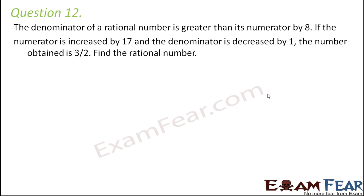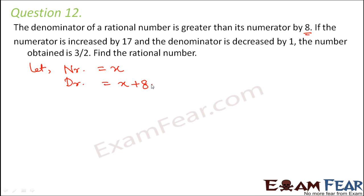Question number 12. The denominator of a rational number is greater than its numerator by 8. If the numerator is increased by 17 and the denominator is decreased by 1, the number obtained is 3/2. Find the rational number. Let the numerator be x; then the denominator is x + 8, giving the rational number x/(x + 8).